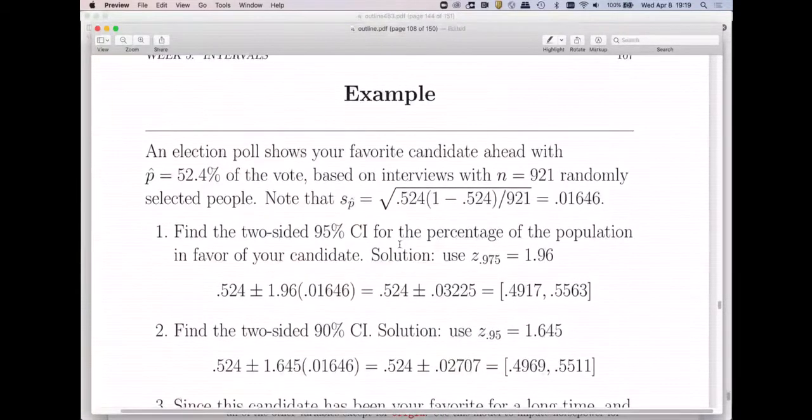So let's go to a problem. Let's say there's an election coming up, and we just did a poll of 921 randomly selected likely voters. And what we found from this poll is that 52.4% said they were going to vote for my candidate. Now, I can go compute the standard error, and I could give you a problem like this: Go find a two-sided 95% confidence interval for the true percentage who will vote for our candidate.